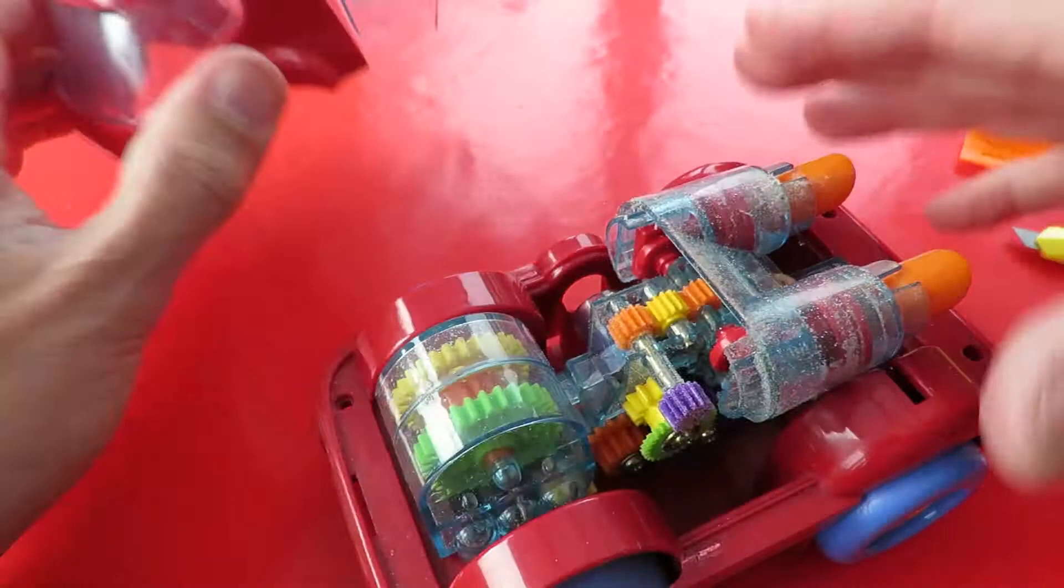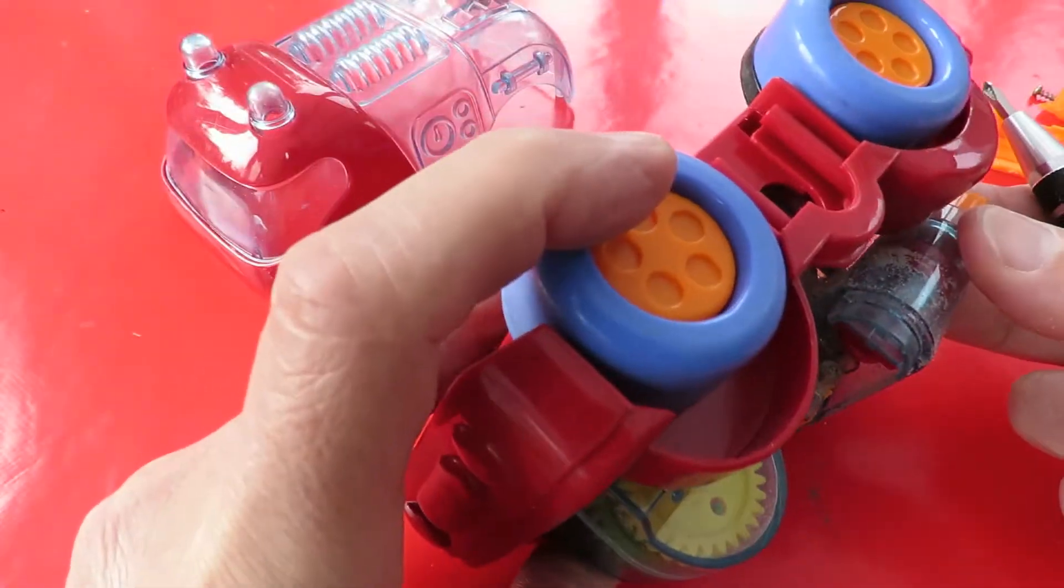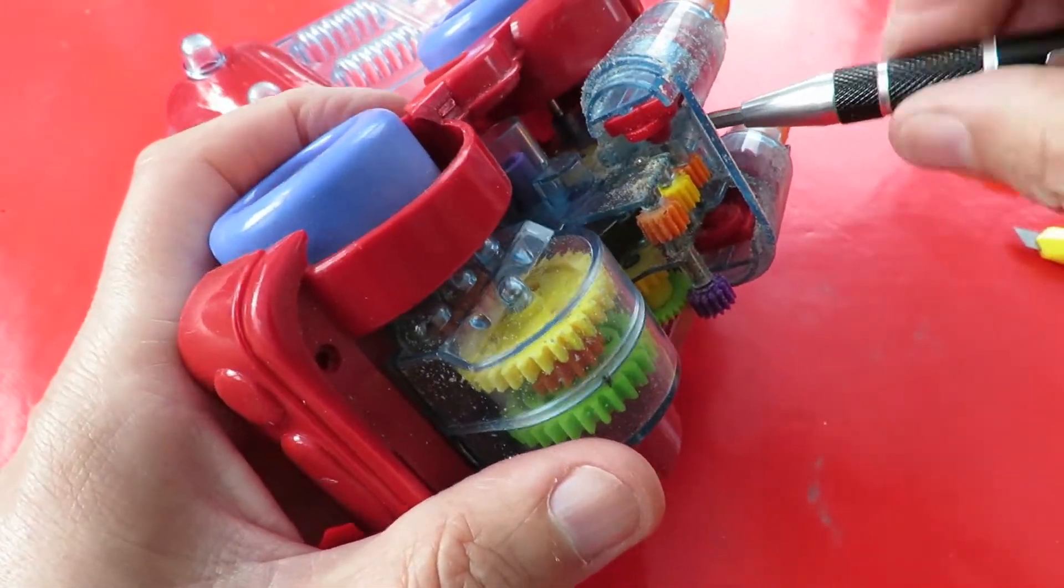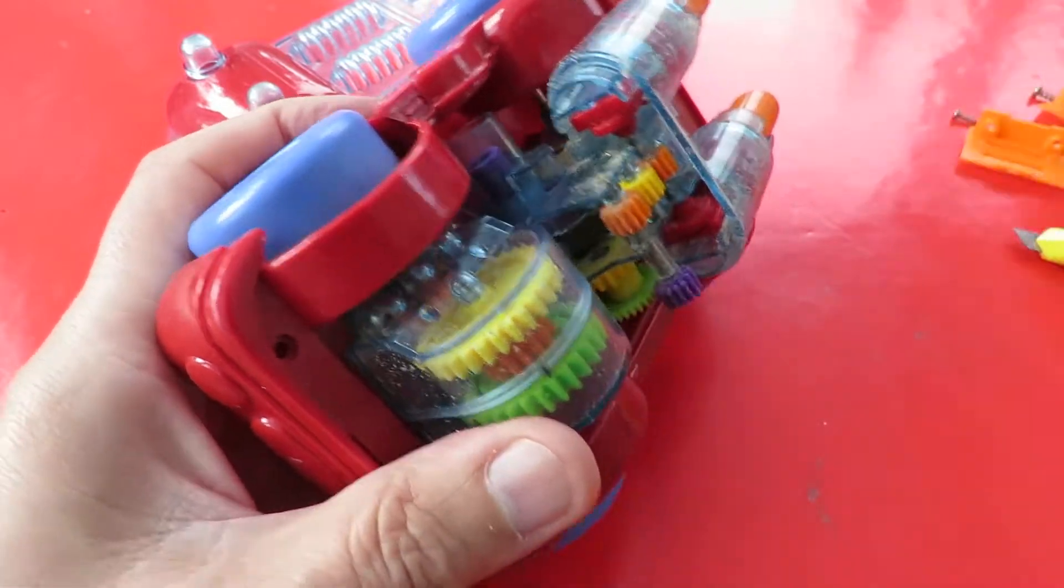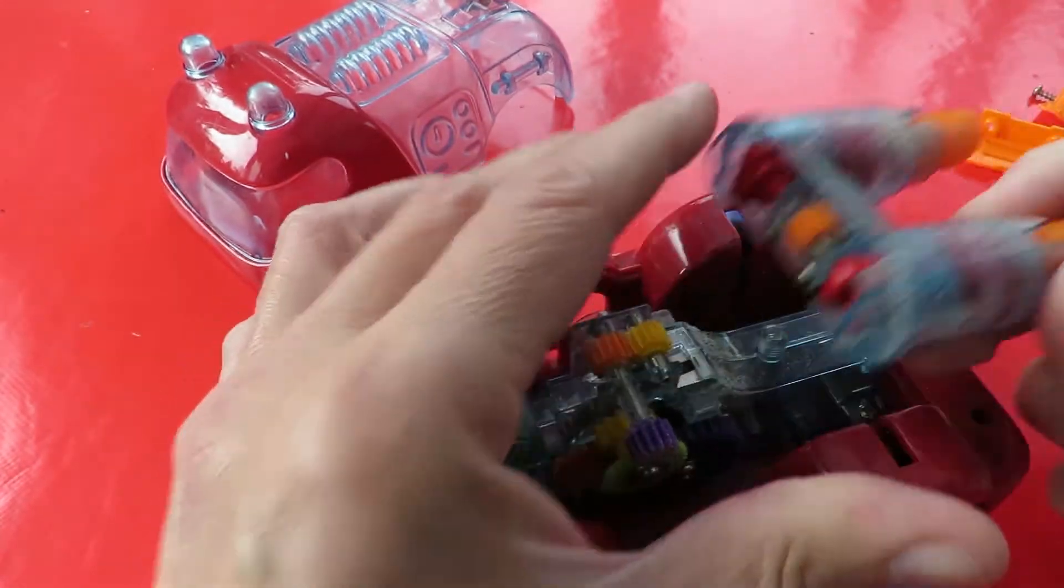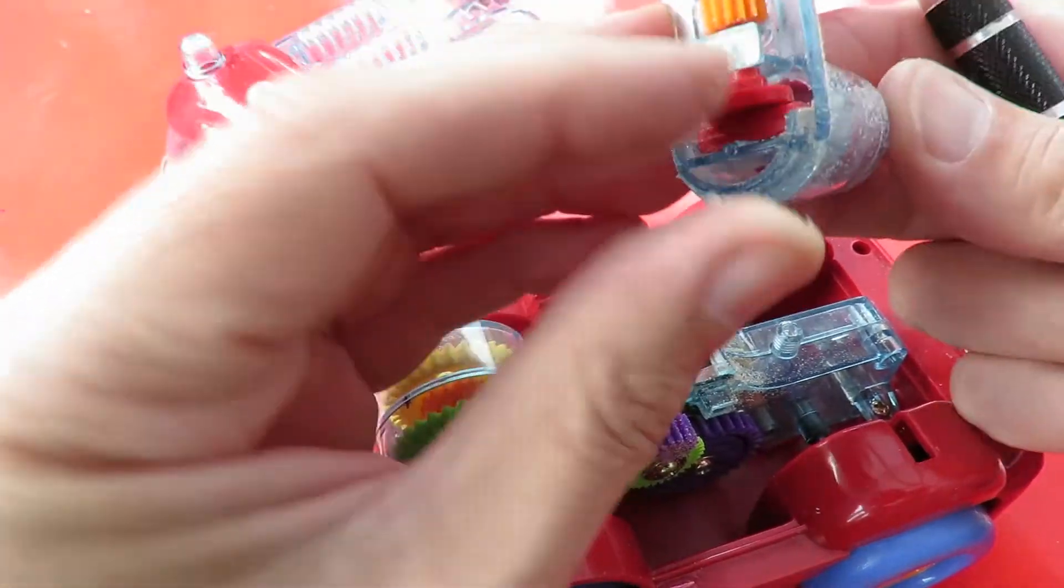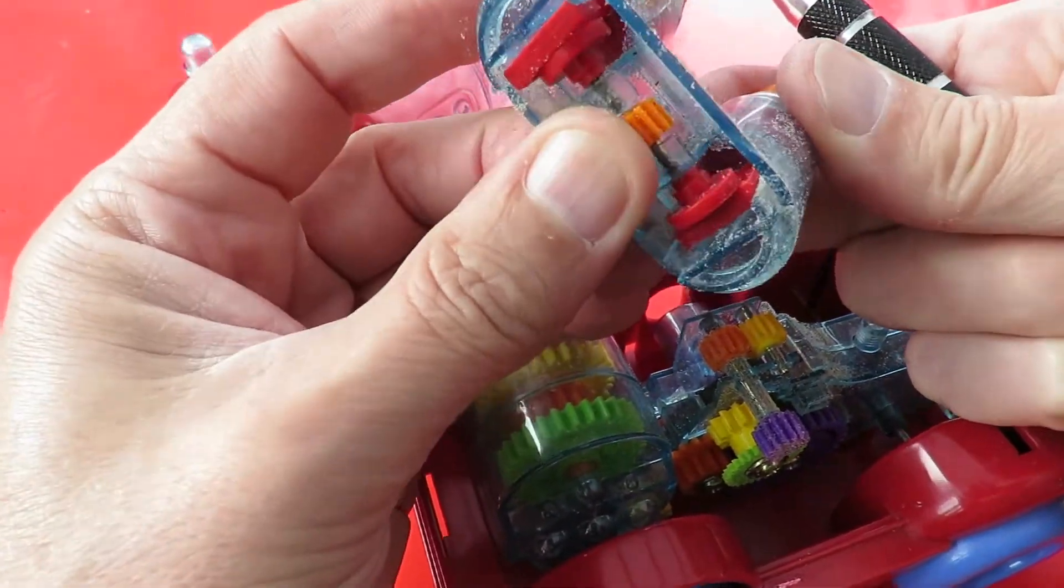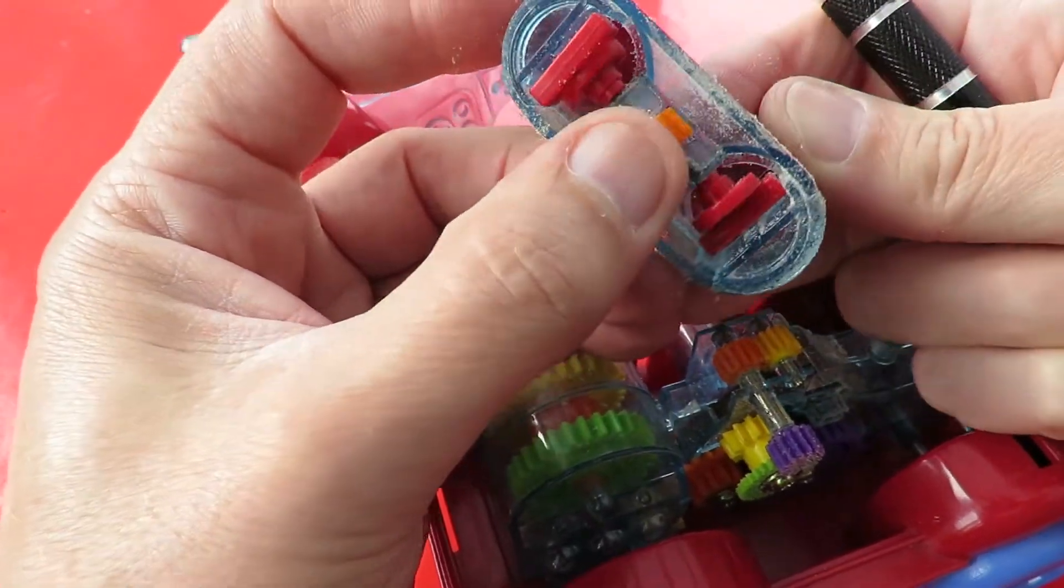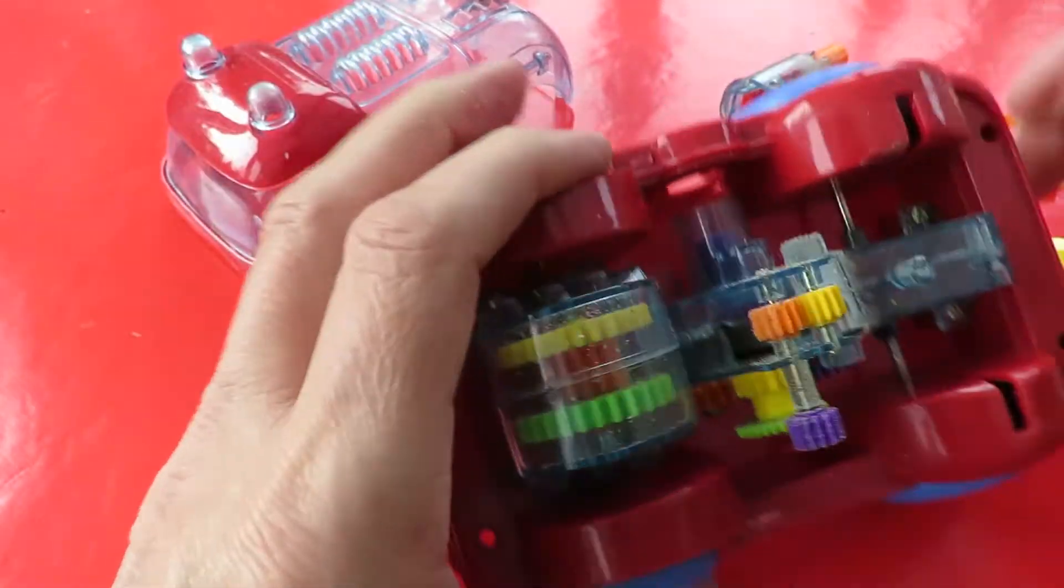So that comes off that way. That's the sort of piston-y things. They're jammed. I don't know what all this is. It's like sand. It probably is sand, isn't it?